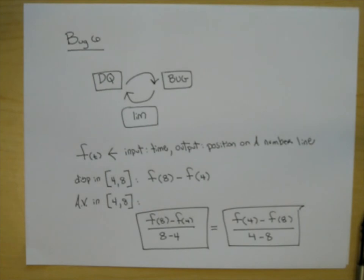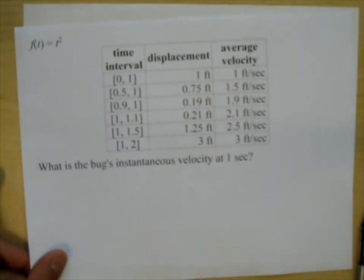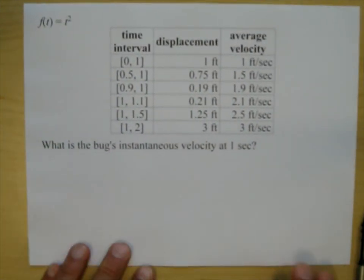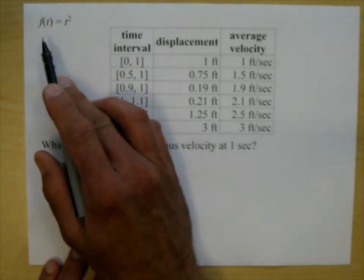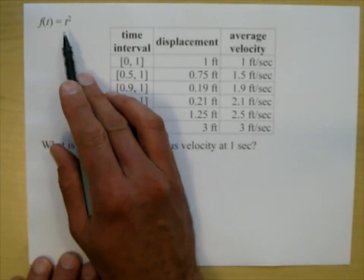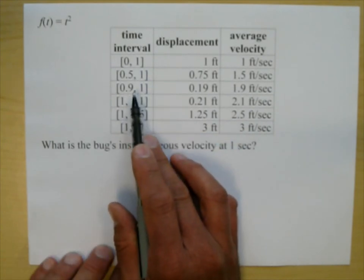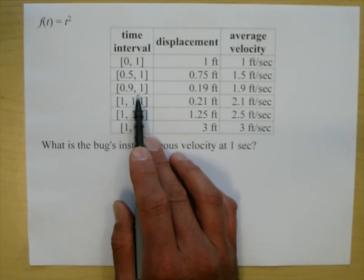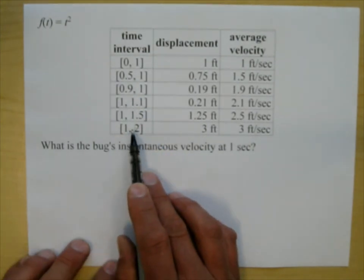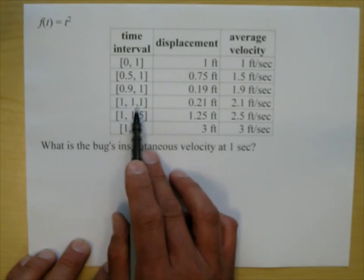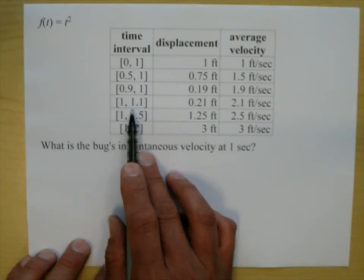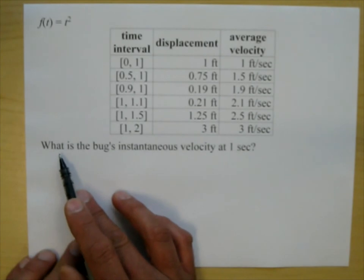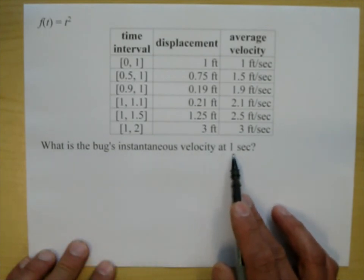When we did Bug number 4, we had to fill in a chart. I'm going to have that chart filled in for us because we've already done this work. We're looking at the function F of t equals t squared, and we have time intervals. The first three kept getting smaller and coming closer to 1 from the left, and then three time intervals kept getting smaller coming in from the right. They asked: what is the bug's instantaneous velocity at 1 second?